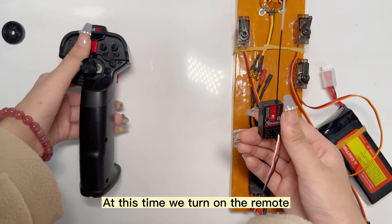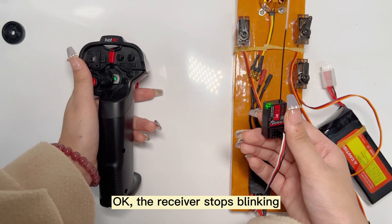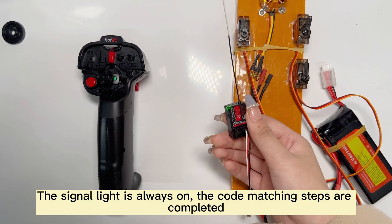At this time, we turn on the remote. Okay, the receiver stops blinking. The signal light is always on.